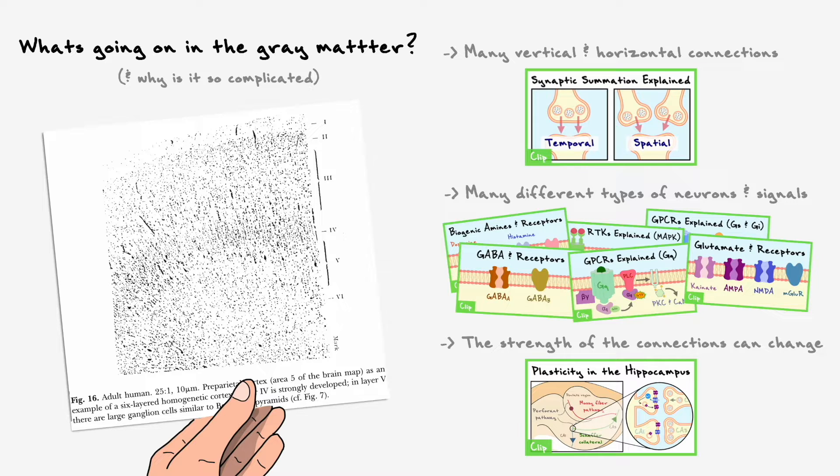Nevertheless, in future videos, we will revisit the grey matter to explore the models scientists have came up with to describe the different types of neurons, how they assemble, and most importantly, how they end up producing the cognitive functions we are all familiar with.